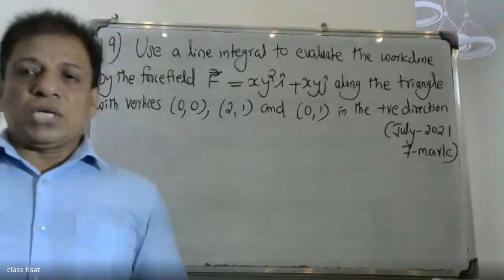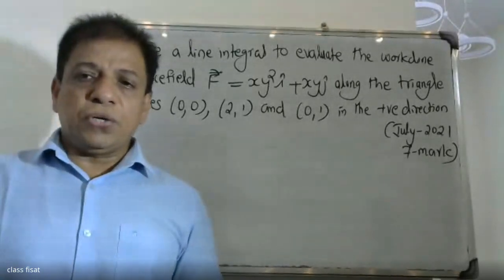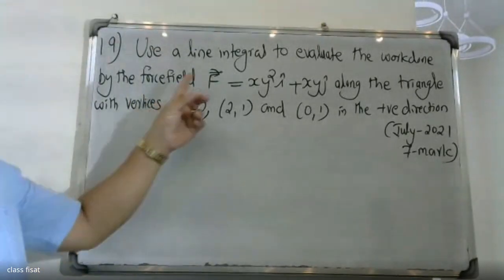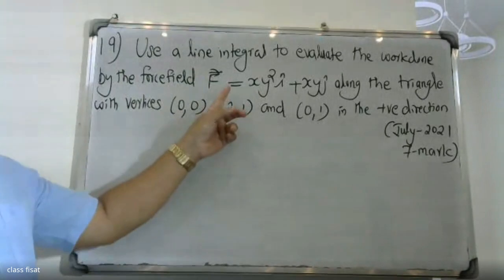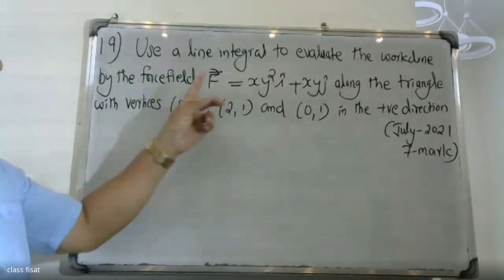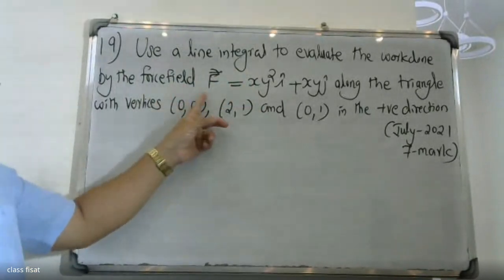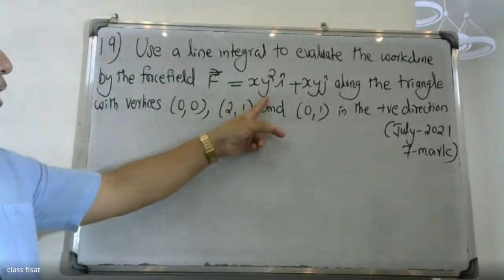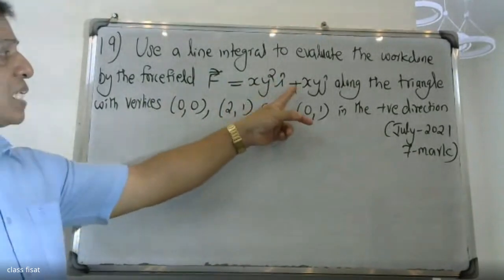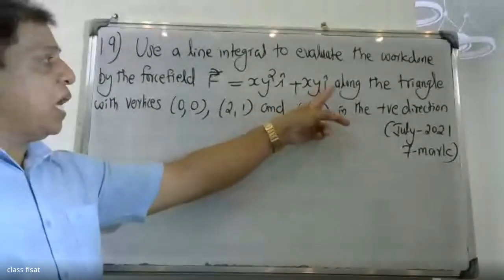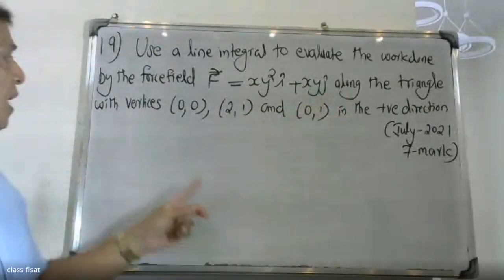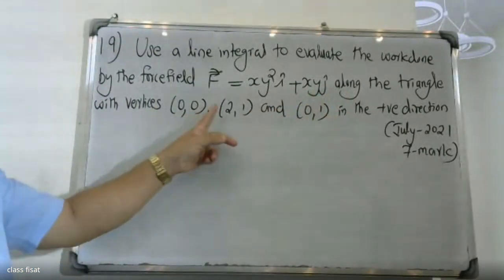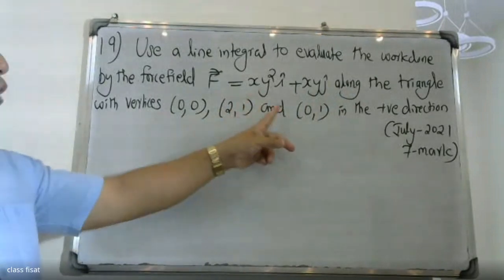Good morning students. We use a line integral to evaluate the work done by the force field F equal to xy² i plus xy j along the triangle with the vertices (0,0), (2,1), and (0,1).